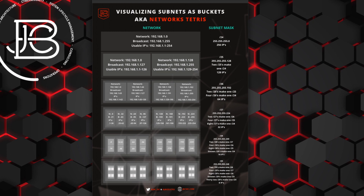The same thing continues as you go further down into smaller subnets. With the slash 25, it starts on 128 as the network address and ends on 255 as the broadcast address, meaning both 128 and 255 are not usable for hosts. That leaves you with 129 through 254 as your usable range.